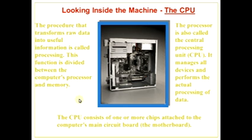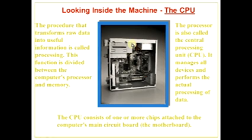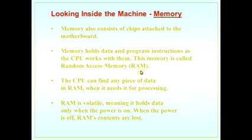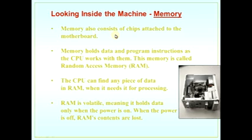The process that transforms raw data into useful information is called the processor. The processor is called the central processing unit — CPU. It manages all devices and performs the actual processing of data. The CPU consists of one or more chips seated on the computer's main circuit board, which is called the motherboard. All circuits are placed on the motherboard.